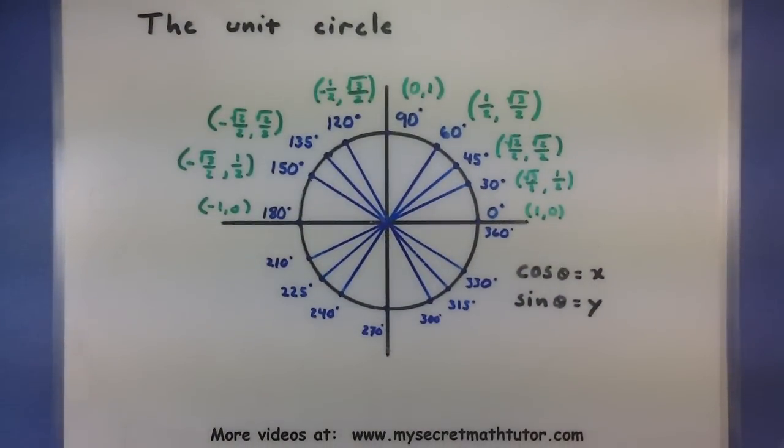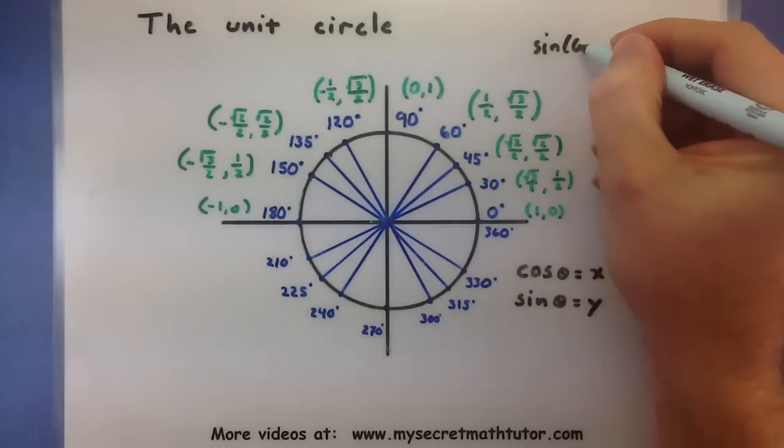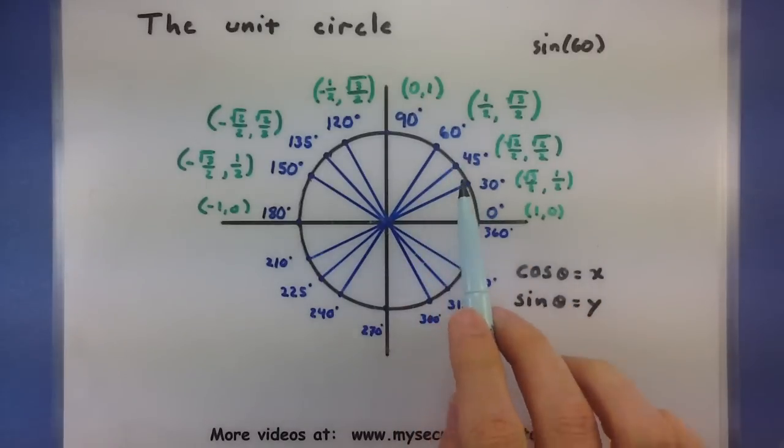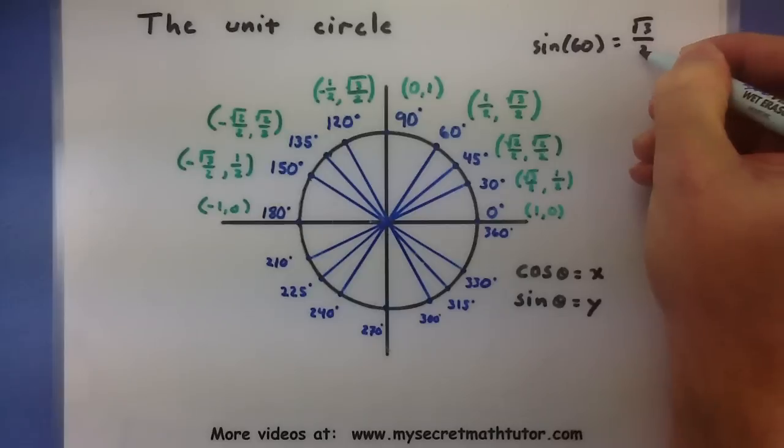The unit circle can be used to figure out key values of cosine and sine, just by looking at the coordinates of the points on the unit circle. For example, if you were interested in figuring out the sine of 60 degrees, you could look at 60 degrees on the unit circle and then take the y-coordinate, and you have its value, so square root of 3 over 2.